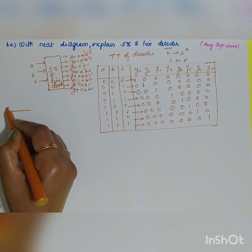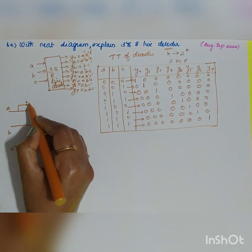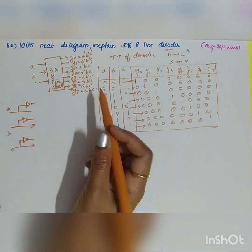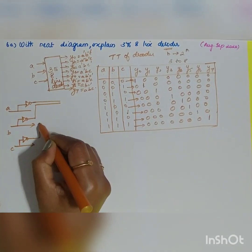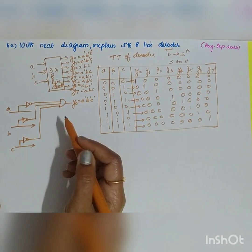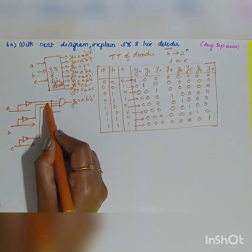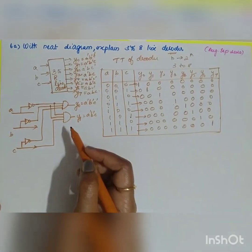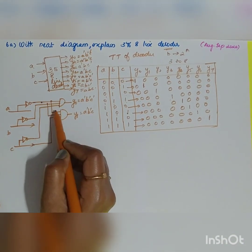The inputs are A, B, and C. Since we also need A', B', and C', we use NOT gates to generate the complements. For Y0, inputs A', B', and C' go into a 3-input AND gate giving A'B'C'. For Y1, inputs A', B', and C go into an AND gate giving A'B'C. For Y2, A', B, and C' give A'BC'.